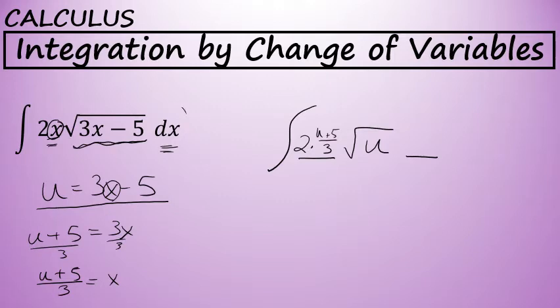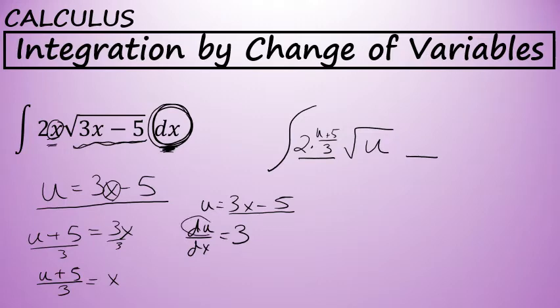To complete the change of variables, I'll have to rewrite dx in terms of u as well. Let's begin with u equals 3x minus 5, but this time let's take the derivative of u with respect to x. The derivative of u is simply 3. And if we want to replace dx with something in terms of u, let's solve this equation for dx. That will involve multiplying both sides of the equation by a factor of dx, and we find that du equals 3 times dx. Divide both sides by 3, and we will find that dx is equal to du over 3.